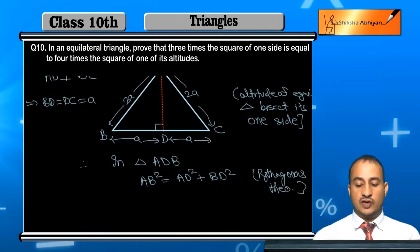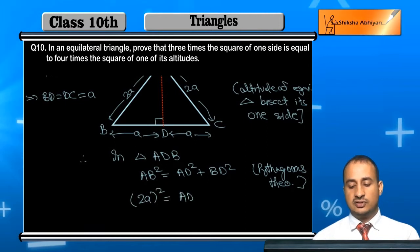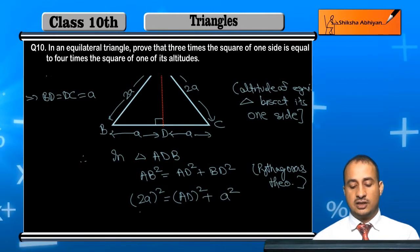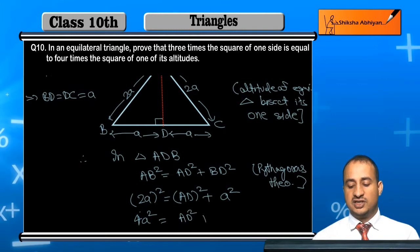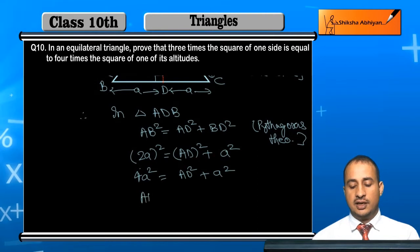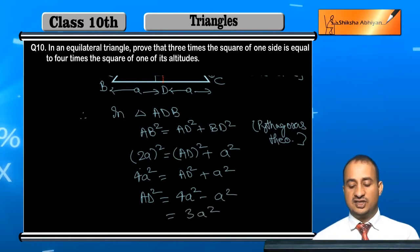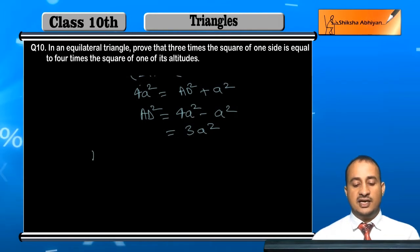In this case, AB is 2A, so we write: 2A whole squared equals AD squared plus A squared. That gives us 4A squared equals AD squared plus A squared. Therefore, AD squared equals 4A squared minus A squared, which is 3A squared. So AD squared is equal to 3A squared.